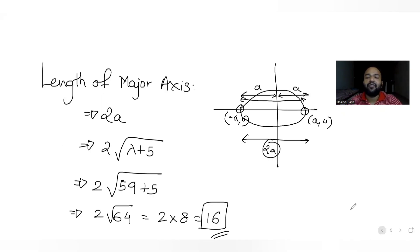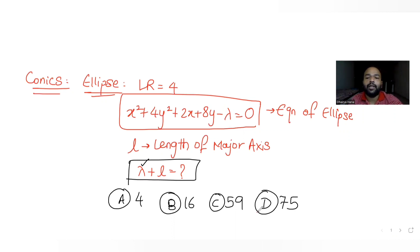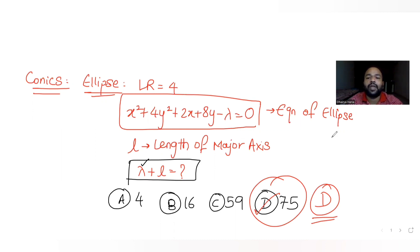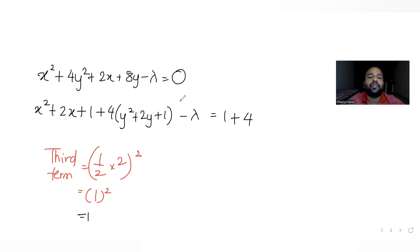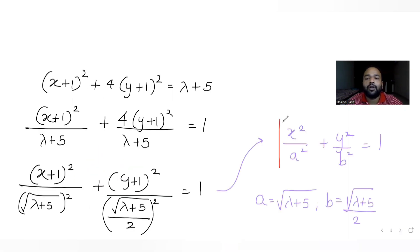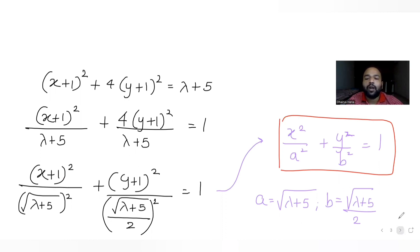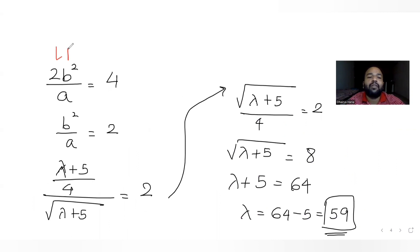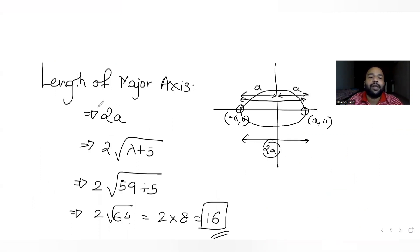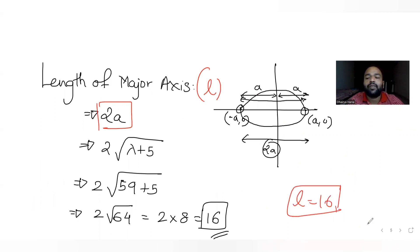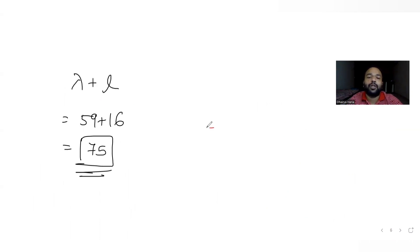The answer is option D. To summarize: we took the general equation of the ellipse, converted it by completing the square into the standard form x²/a² + y²/b² = 1, identified a and b, used the latus rectum condition to get λ = 59, then used the major axis formula 2a to get l = 16, so λ + l matches option D which is 70.